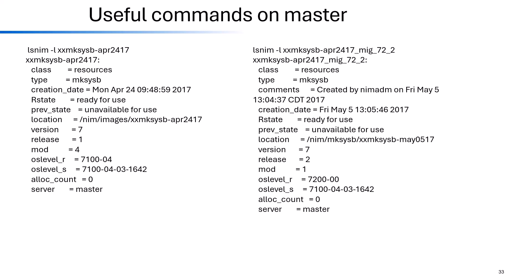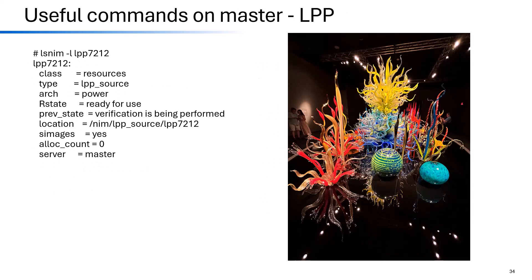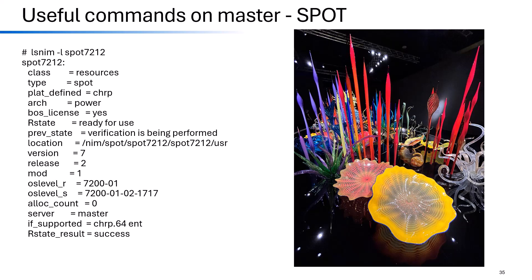The lsnim command on mksysb resources shows, for example, an AIX 7.1 LPAR's mksysb taken at level 7.1.4.3, and a newly created mksysb at 7.2.1. On an lpp_source it shows status as ready for use, location, and s_images=yes. On a SPOT it provides the location plus version, release, and modification level — for example, 7.2.1.2.